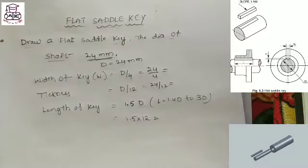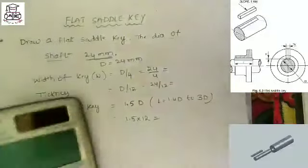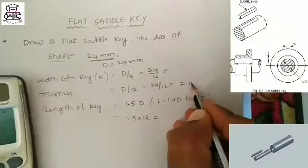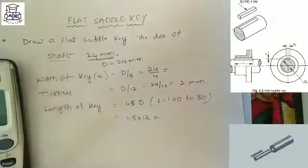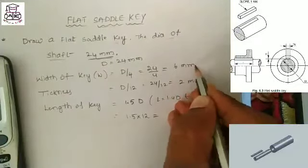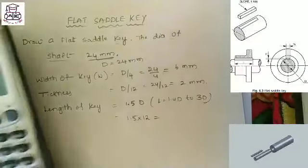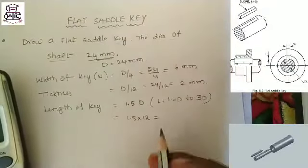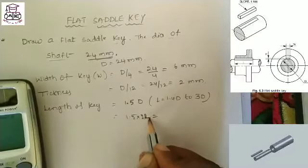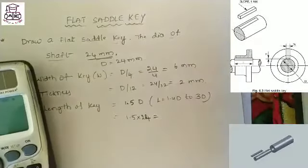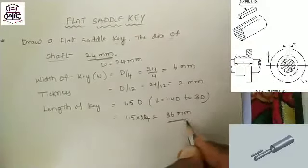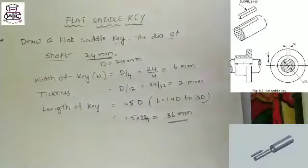This is 24 by 12, that means 2 mm. D by 4 means 6 mm. The length of key equal 1.5 into 24, then equal to 36 mm. This is the data about the flat saddle key.